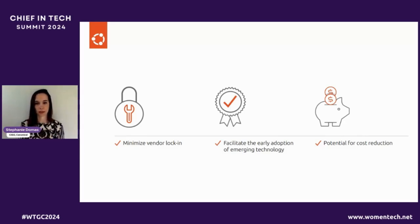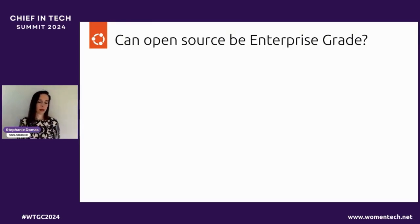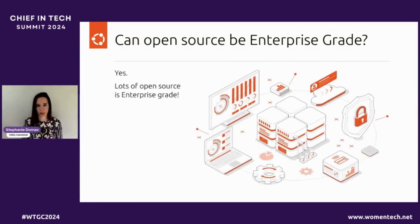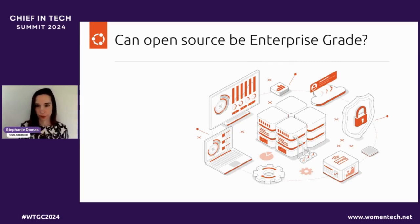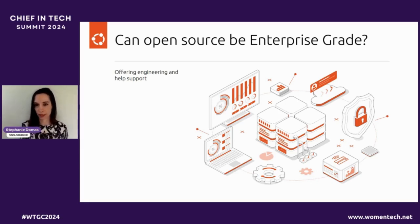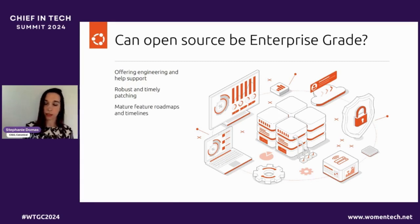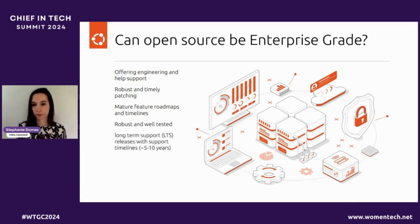But can it be enterprise ready? The truth is yes. There are lots of open source that is enterprise grade. Enterprise grade means software that supports many of the same feature functionality and support that you would get with proprietary software — offering engineering help and support, robust and timely patching, mature future roadmaps and timelines, so you can see a feature is coming in six months, robust and well tested, and long term support with a guaranteed support and patching timeline of five to ten or sometimes more years.